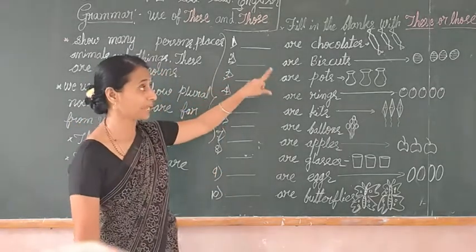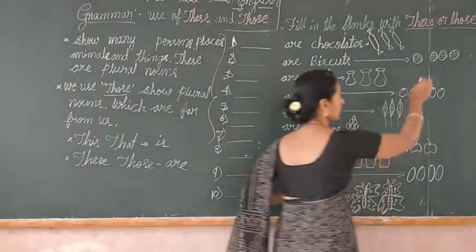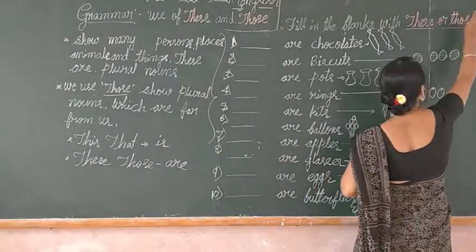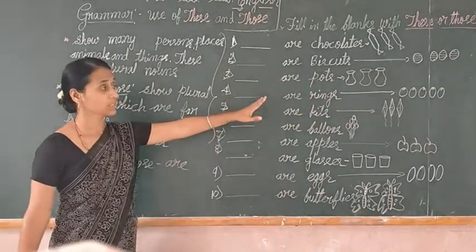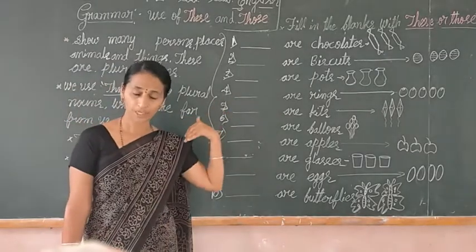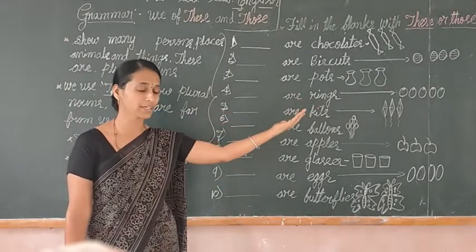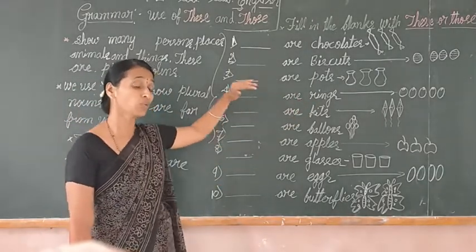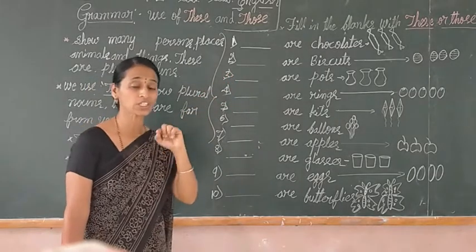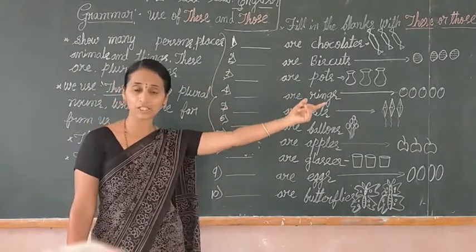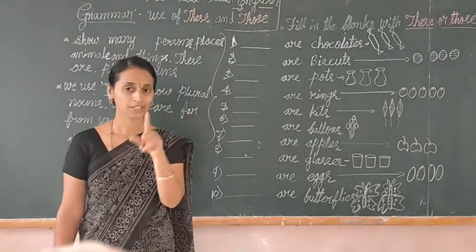Fill in the blanks with 'these' or 'those,' students. See the pictures — if the picture is near to me, we use 'these'; if it is far away from us, we use 'those.' Identify and fill in accordingly.